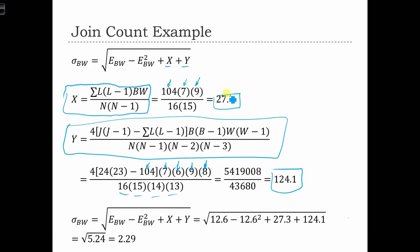Now we need to plug x and y into the square root and plug in the expected value of black-white joints, which we calculated on the previous slide, that EBW equals 12.6. So to plug everything back in, we're on this line now. We have EBW is 12.6 minus 12.6 squared plus x, that was this over here, plus y, which is this over here. And when we add this all up and take the square root, we get the standard error to be 2.29.